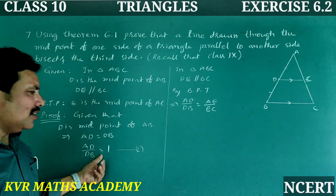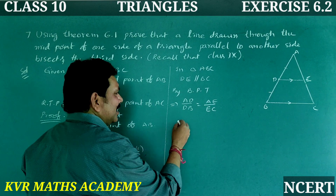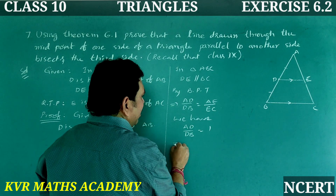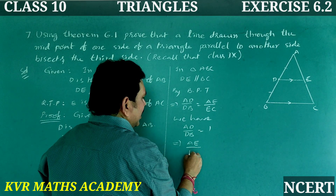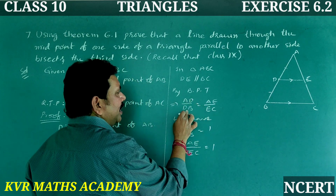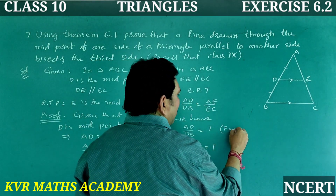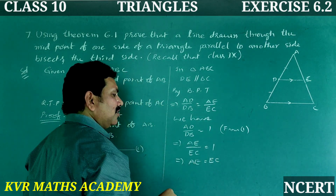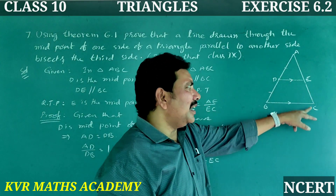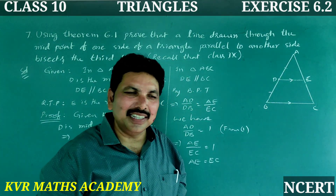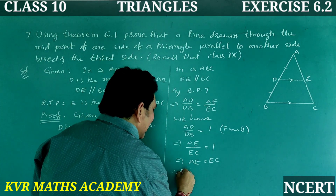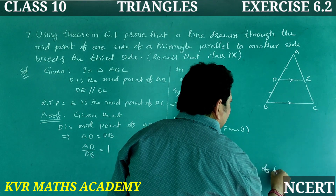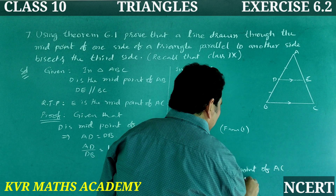From equation (1), AD divided by DB is equal to 1. That implies AE divided by EC is also equal to 1, which means AE is equal to EC. Therefore, E is the midpoint of AC. Hence proved.